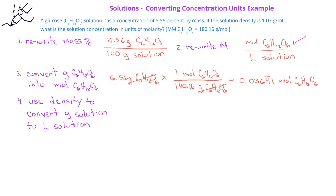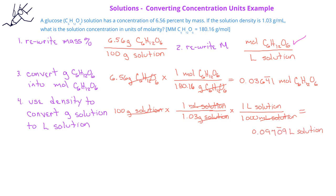So let's go ahead and do that for this example. If we have 100 grams of solution multiplied by 1 milliliter of solution over 1.03 grams of solution, and then we use the conversion factor from liters to milliliters, we would find that we have 0.09709 liters of solution.